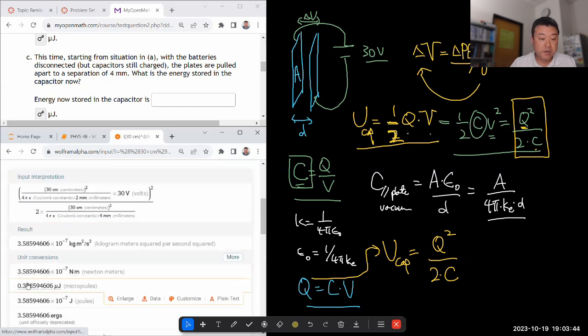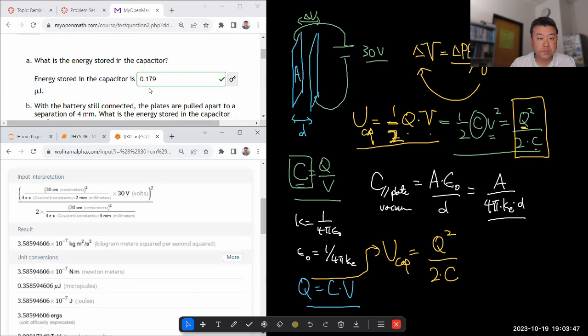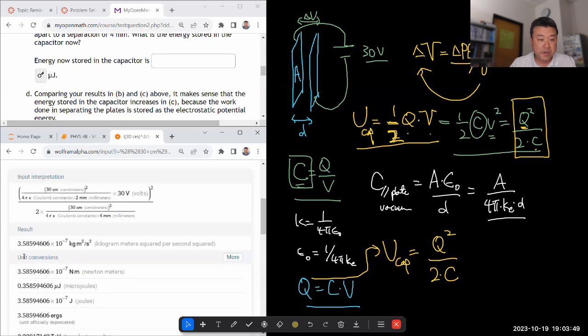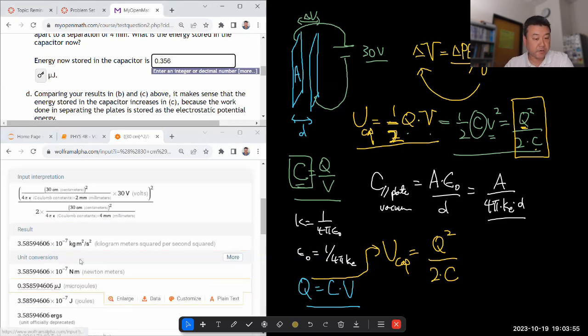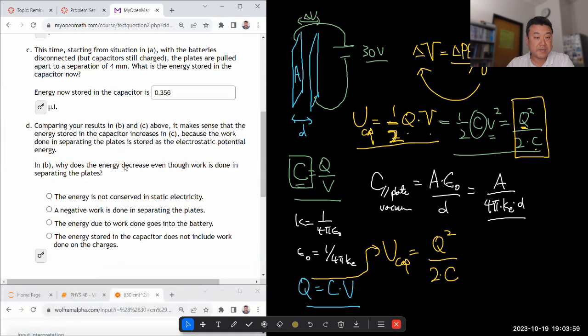That's the answer I would expect. Yeah, it's larger. So in terms of microjoules, it used to be 0.179. Now it will be 0.356. Again, still microjoules.